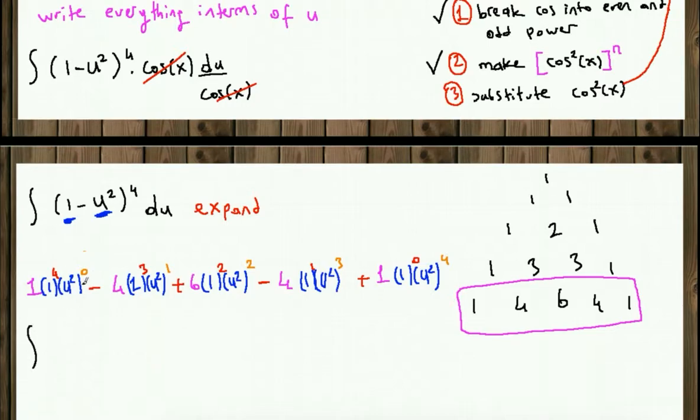So anything to the zeroth power is 1. And this is 1, so 1. Minus 4 times 1 times u to the second plus 6u to the fourth minus 4u to the sixth plus u to the second to the fourth is u to the eighth du.